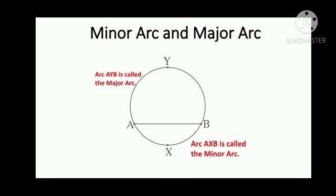Here, arc AYB and arc AXB are mutually corresponding arcs because they have the same endpoints, i.e. point A and point B.